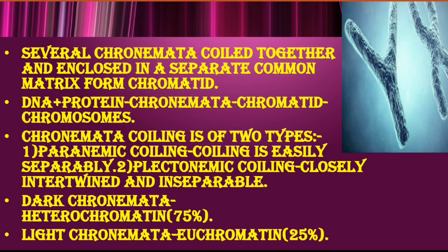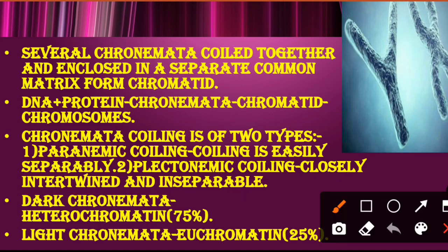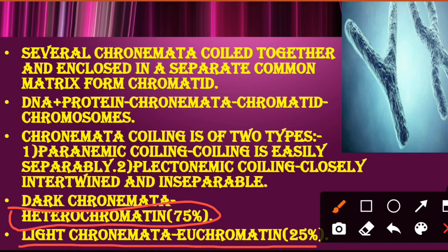The dark chromonema is called heterochromatin, and the light chromonema is called euchromatin. The percentage of each is also given here — inside chromosomes, heterochromatin is more, and euchromatin is less.